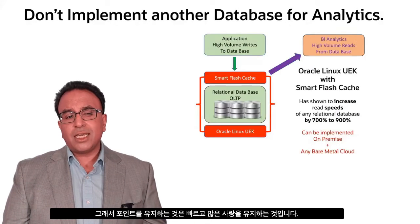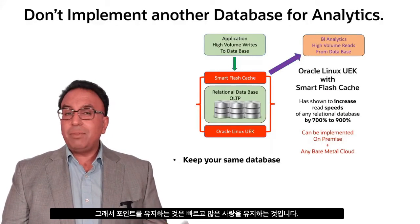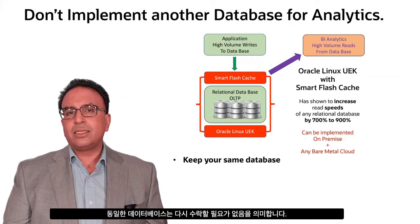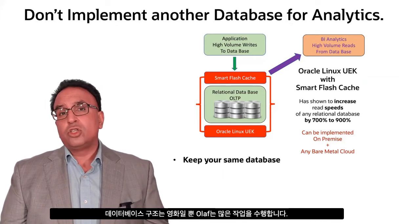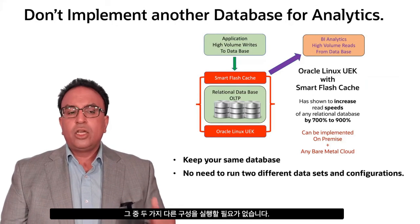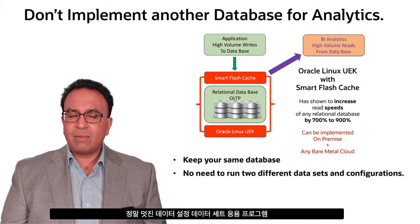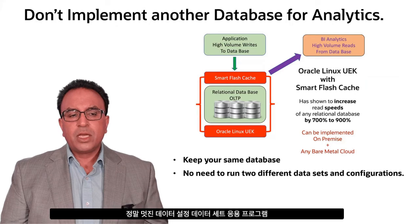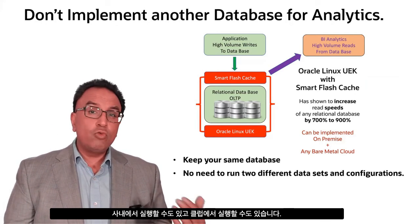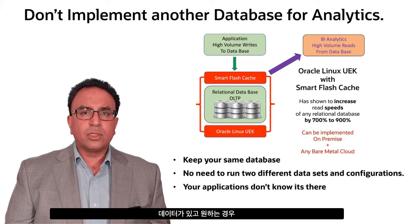Just two key points here. Keeping the same database means that you don't have to re-architect the database structure just to move into OLAP — it takes a lot of work out of it. You don't need to run two different configurations and datasets. Your applications don't know it's there, which is really cool. You can run it on-premise and you can run it in the cloud on Bare Metal Cloud.